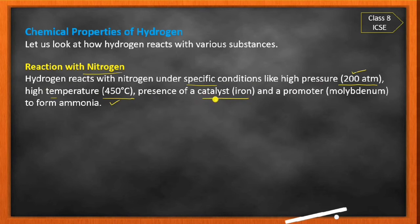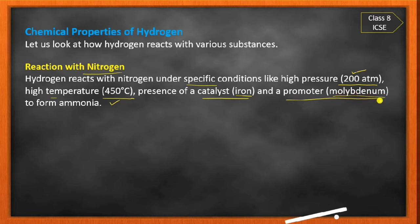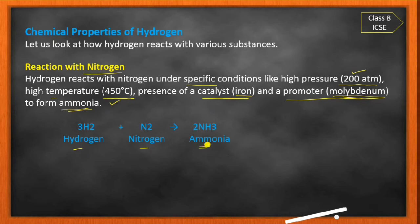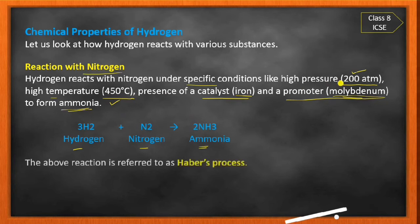Iron acts as a catalyst and molybdenum acts as a promoter in this reaction. Under these specific conditions — 200 atmospheric pressure, 450°C, iron catalyst, molybdenum promoter — hydrogen reacts with nitrogen to form ammonia. This process is called Haber's process.